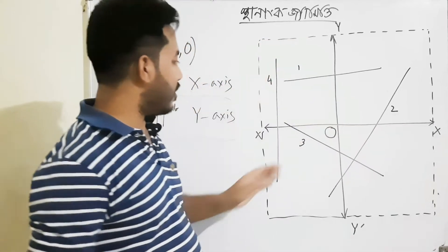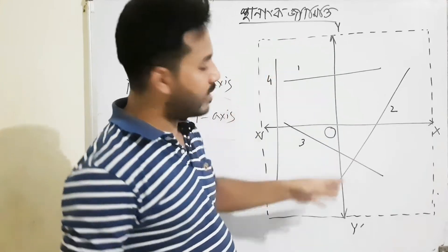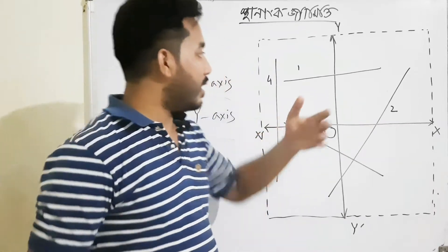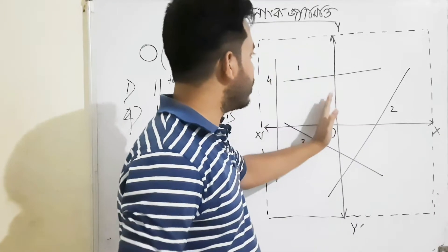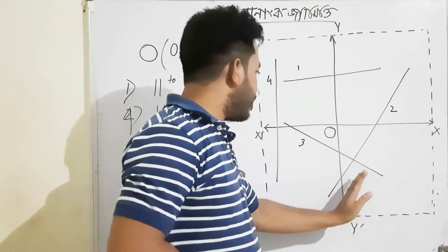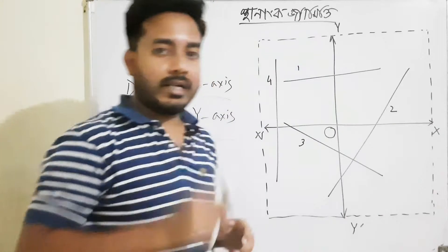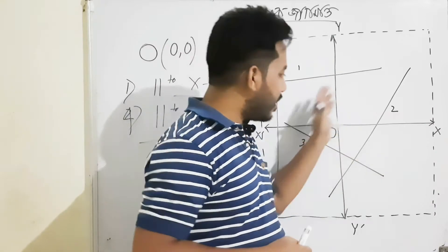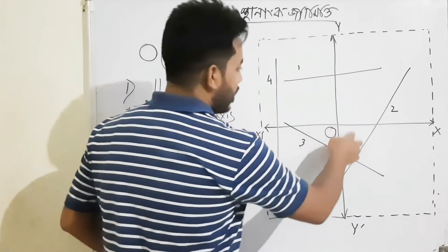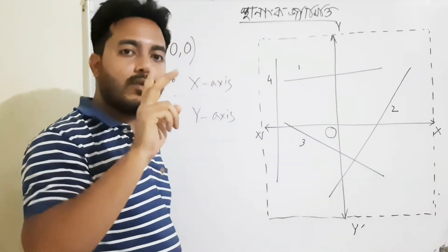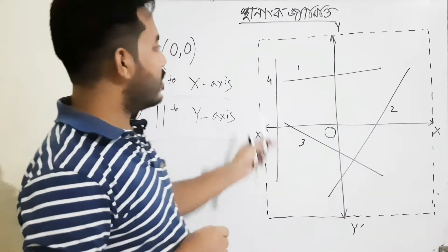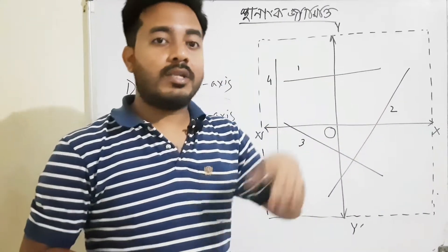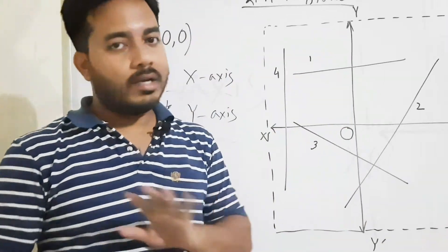If a line drawn is parallel to any of the axes, then that line will intersect the other axis — the non-parallel axis. If that line is parallel, it will always intersect one axis. If it is parallel, it is cut at that point. If it is not parallel, it is cut at another point.